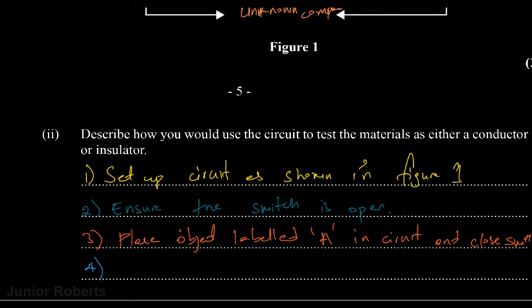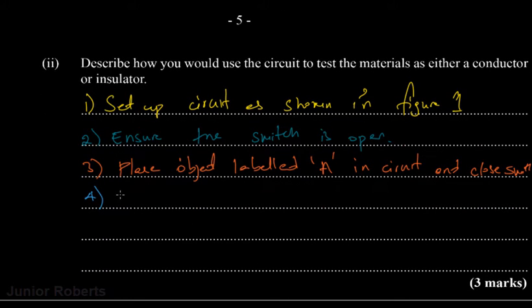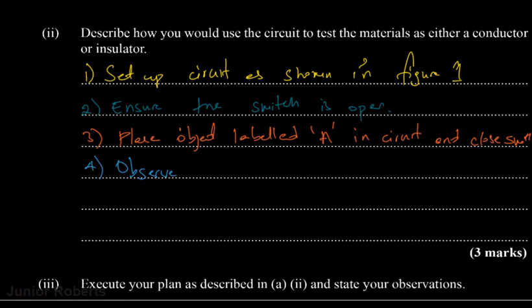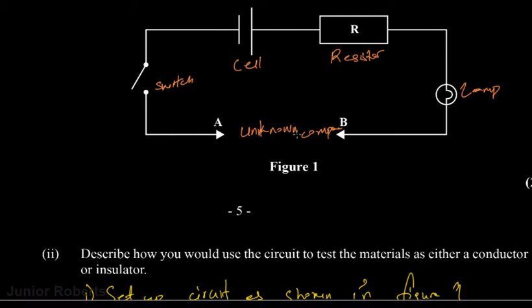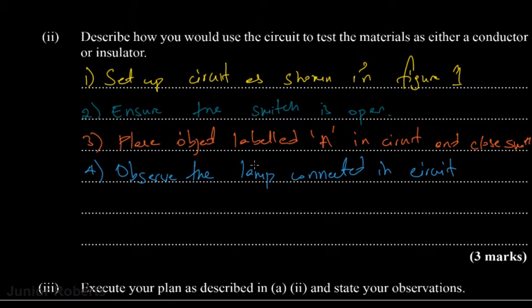Step four: observe the lamp connected in the circuit. We'll place our component — either A, B, C, D, or E — between the gap, then close the switch and observe the lamp. If it's a conductor, current will be conducted around the circuit and the lamp will glow. If it's an insulator, there won't be any current flowing so the lamp will not glow.